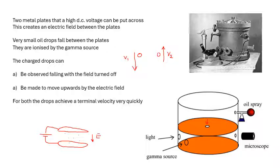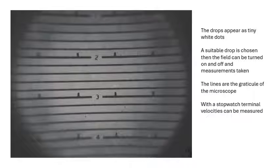You choose a suitable little drop and you measure its terminal velocity when it's falling downwards with the electric field turned on. This is what you actually see when you look through the microscope. The tiny tiny little drops look like tiny tiny little white dots. We saw on the last slide there was light shining into this container and a microscope at the side, and they appear like little little stars, little white drops.